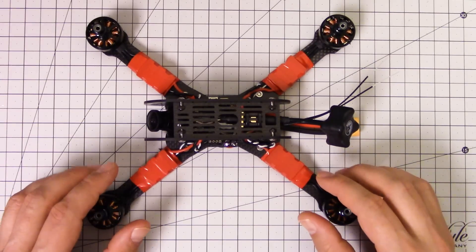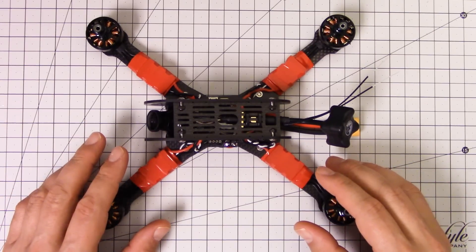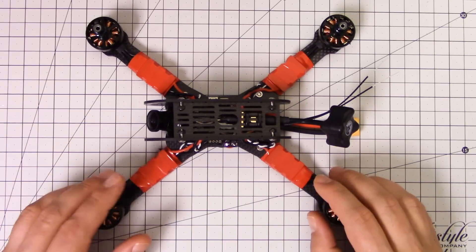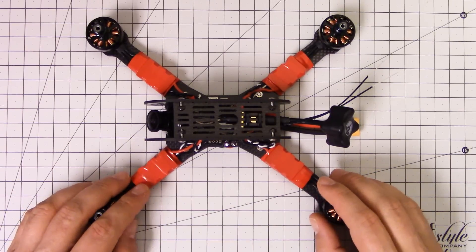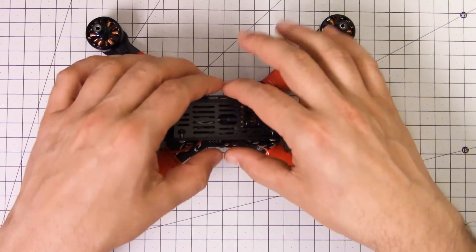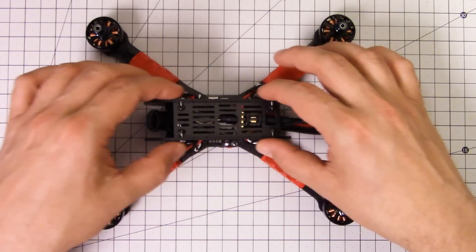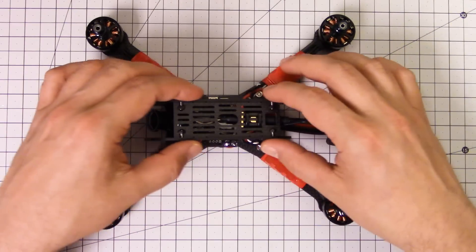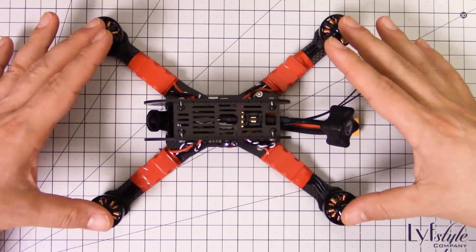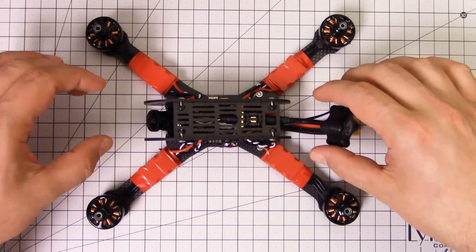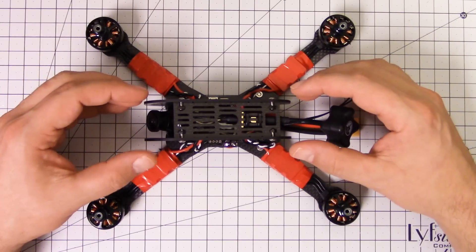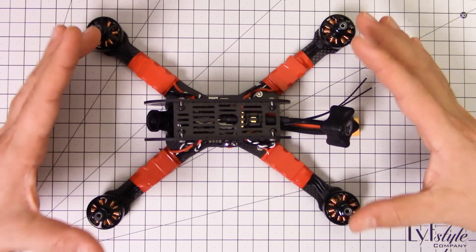If you think about the evolution of quadcopter frames over the years, and specifically let's talk about mini quad frames. The first mini quad frame I would say was the Blackout H, and it had a sort of rectangular motor layout. It was relatively spread out, so it was longer than it was wide and had a relatively spread out weight distribution for the body.